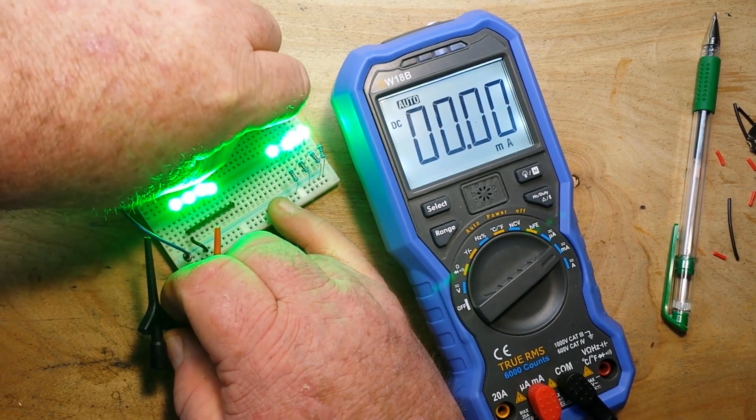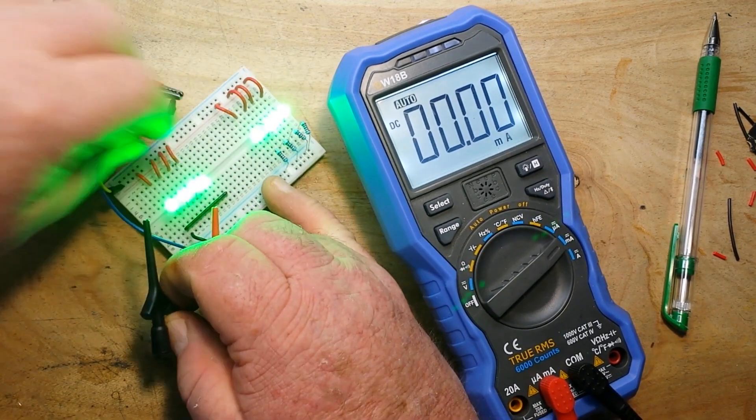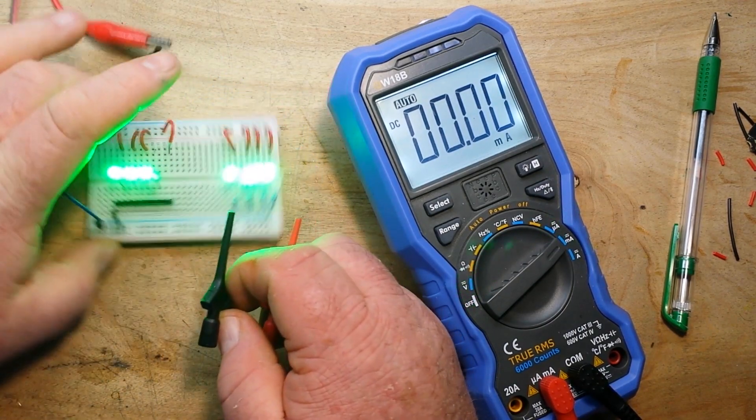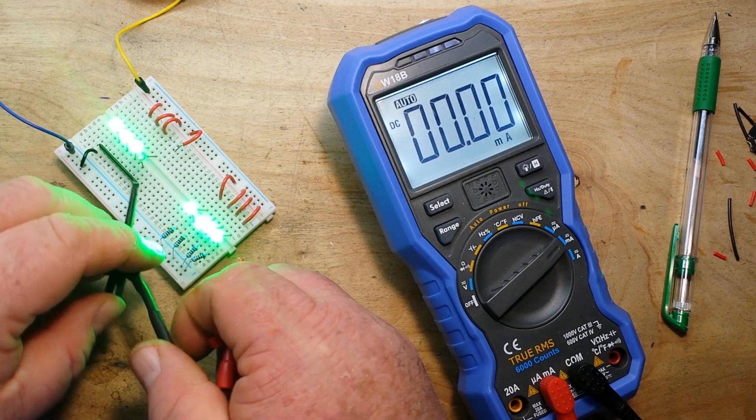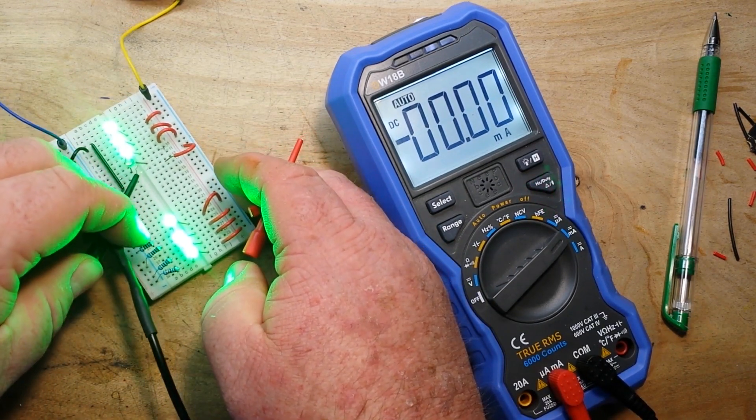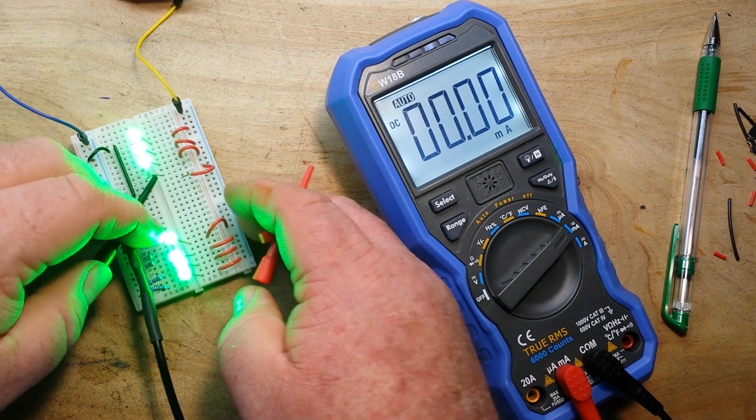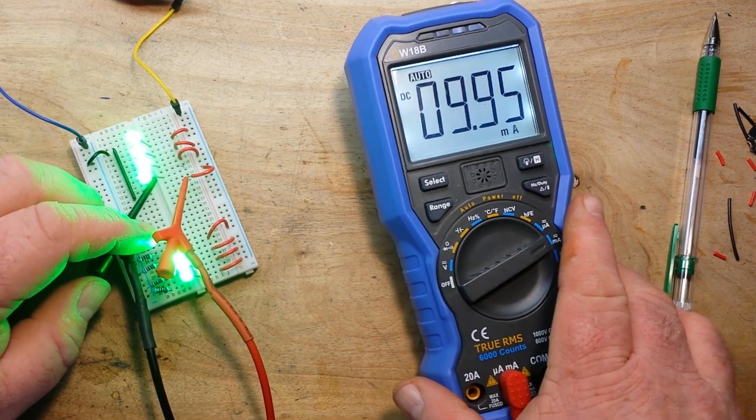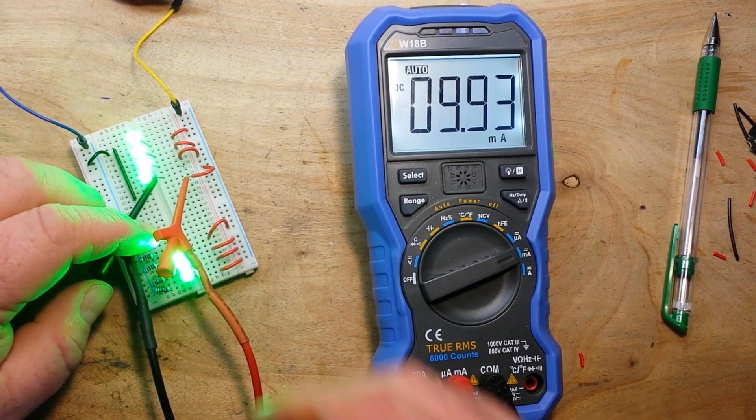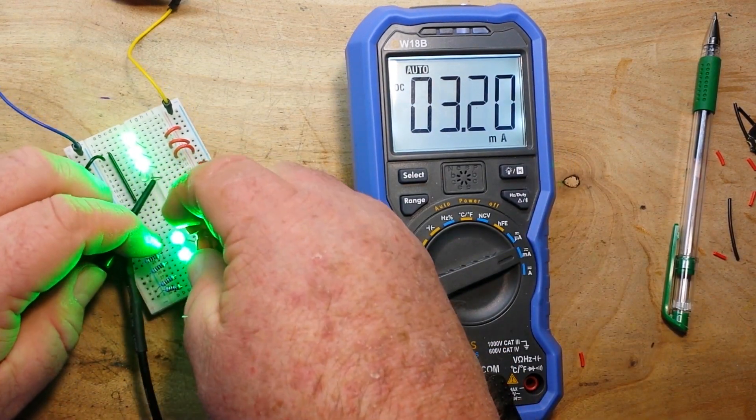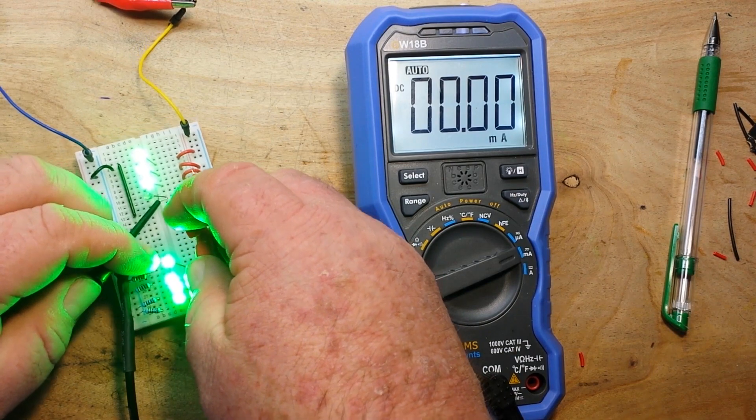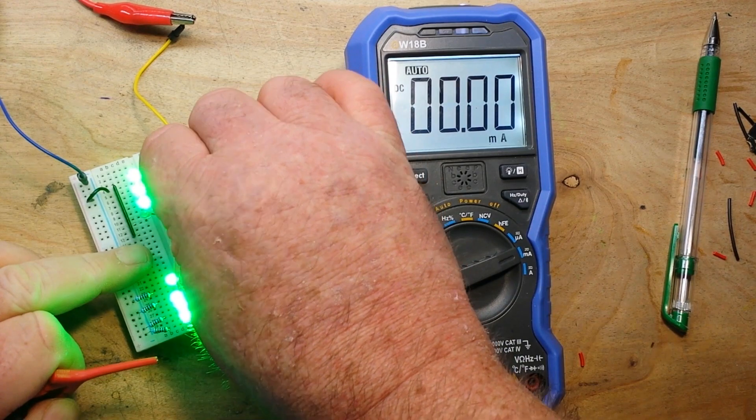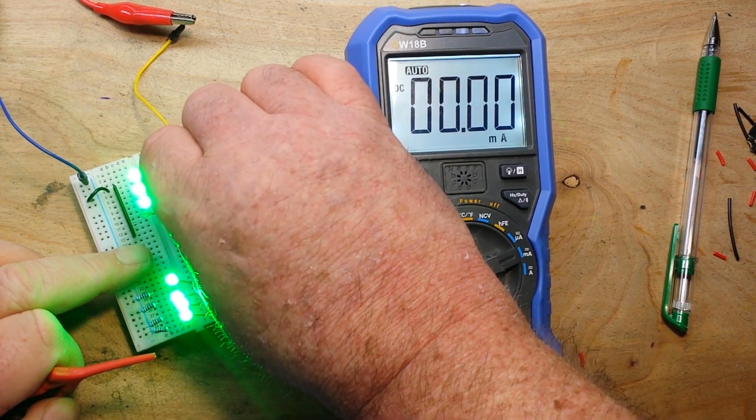And then we can come over here, now unplug one of these, we'll do the same thing. So 9.9, you know we're looking at the difference of 0.3 milliamps.